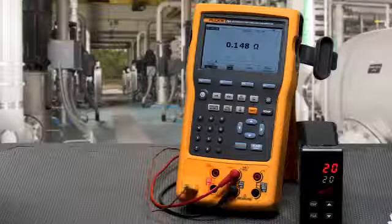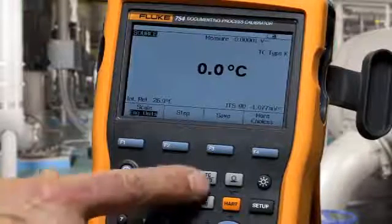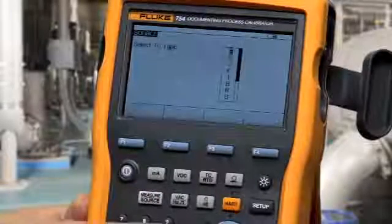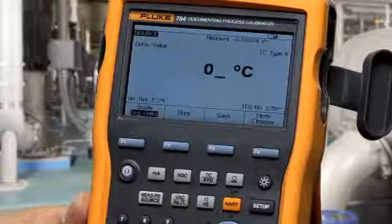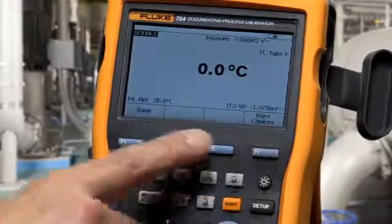First, we'll show ramping the output. First, you must get to the source screen, then select the function. In this case, we're selected for a type K thermocouple. Type in your temperature value. Select more choices twice, and then select ramp.